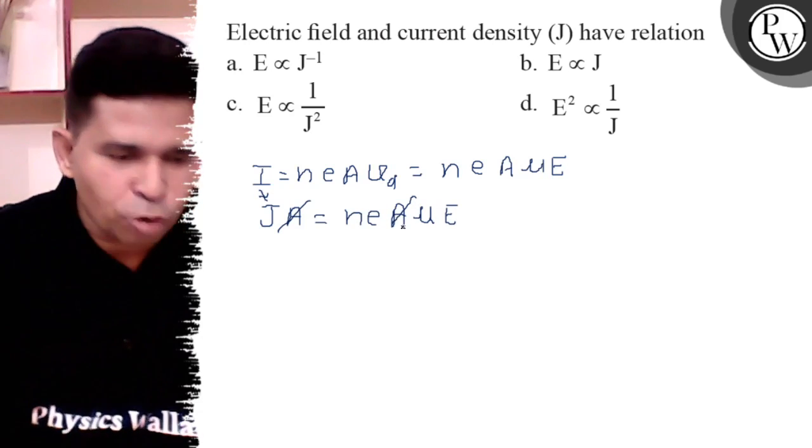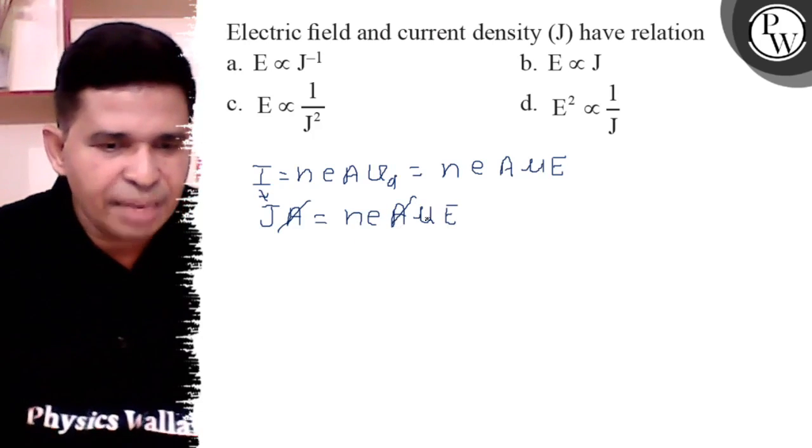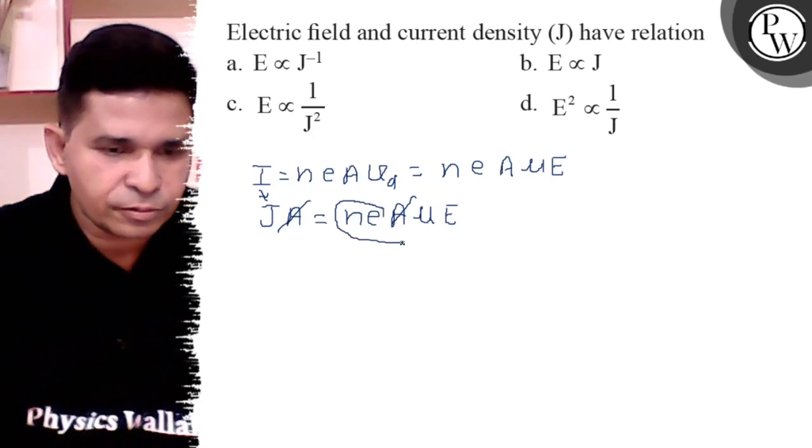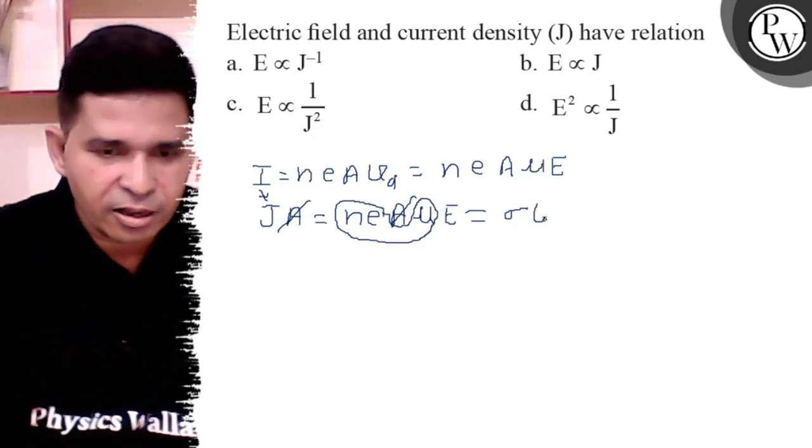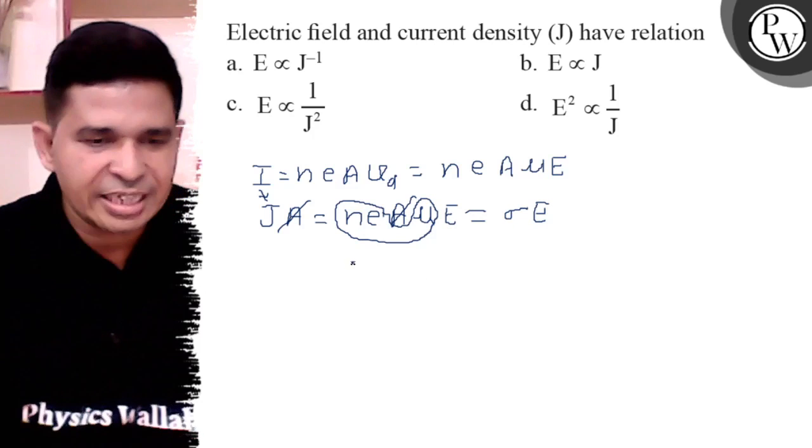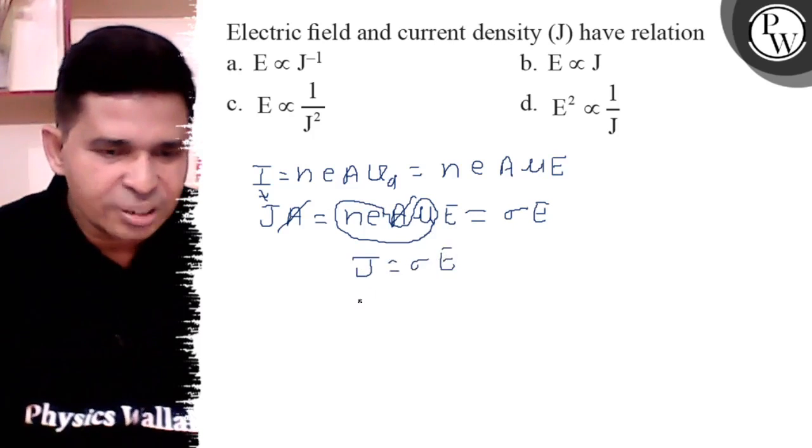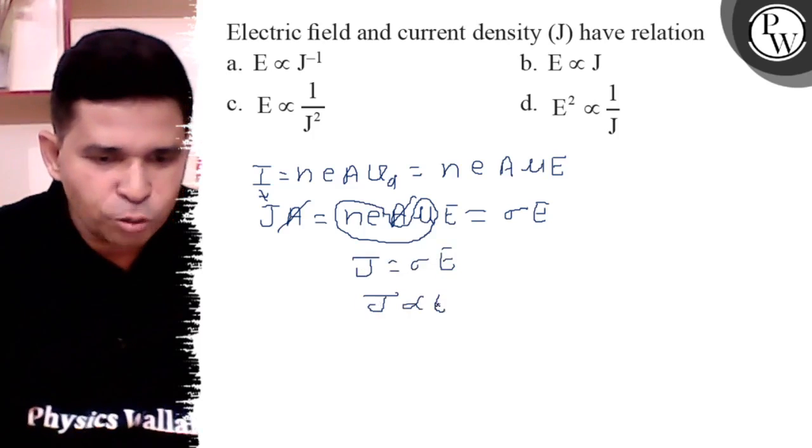Area cancels out and n e mu is the sigma conductivity, so J is equal to sigma E, so J is proportional to E.